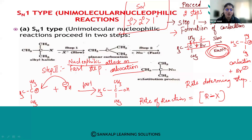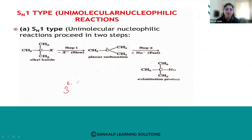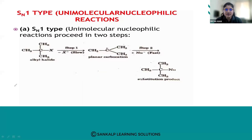So the order of stability of carbocations in SN1 is: tertiary > secondary > primary > methyl carbocation. SN1 mechanism proceeds via two steps: the first is the slow carbocation-forming step, and the second is the fast nucleophilic attack to form the substituted product, which is the alcohol.